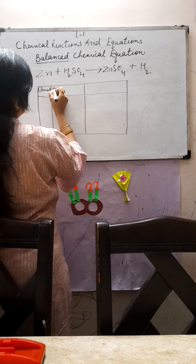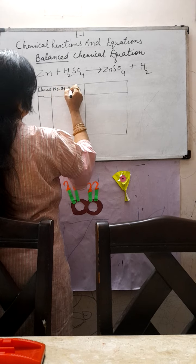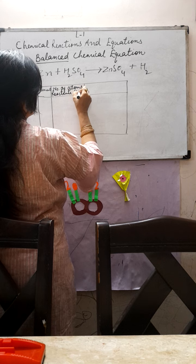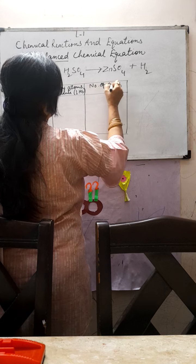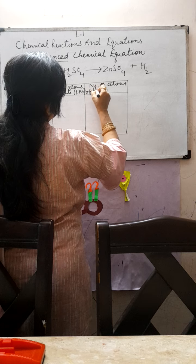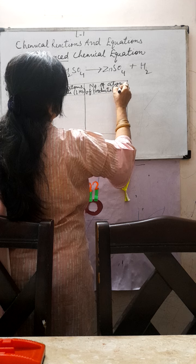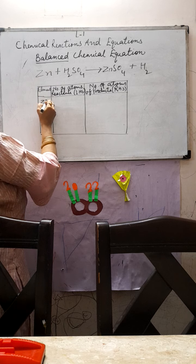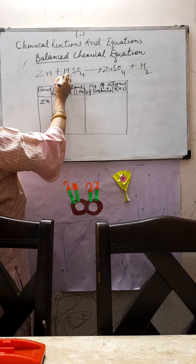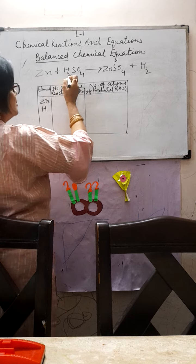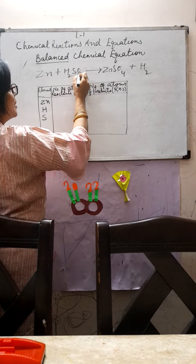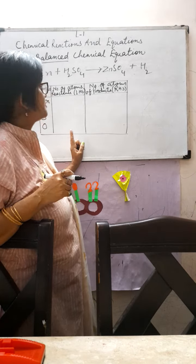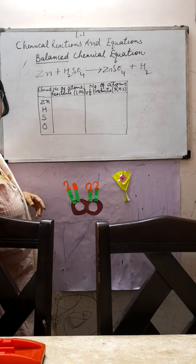In the table we write: name of the elements, number of atoms of reactants on the LHS side, and number of atoms of products on the RHS side. Reactants are written at the left-hand side and products at the right-hand side. Now find out how many elements are there: zinc, hydrogen, sulfur, and oxygen — four elements participating in this chemical reaction. Now we will see how many atoms of each element are on the LHS and RHS.